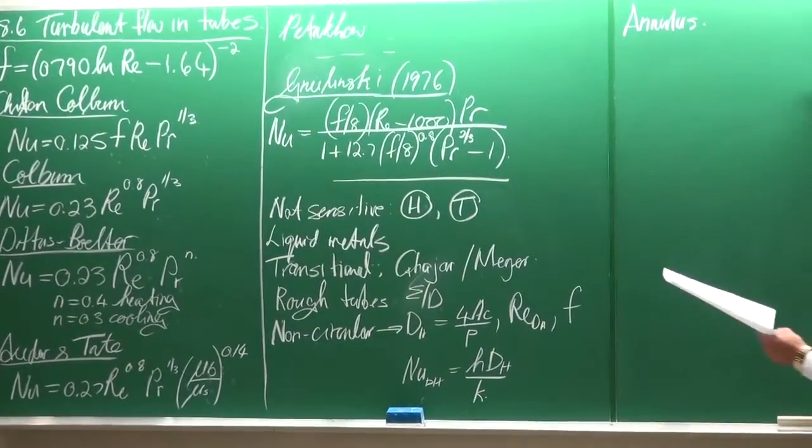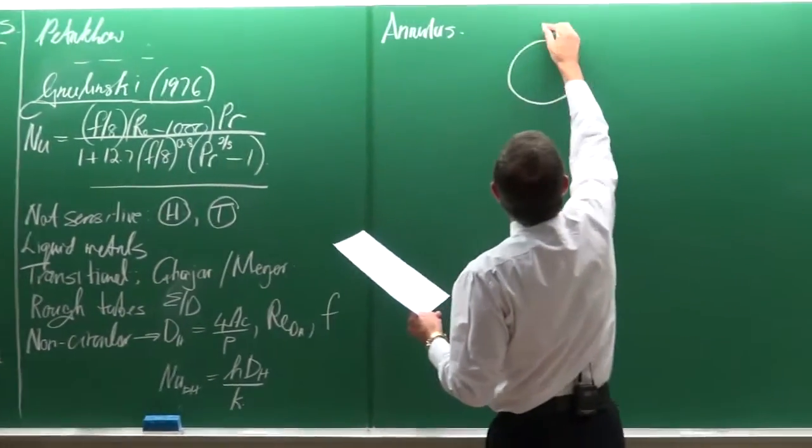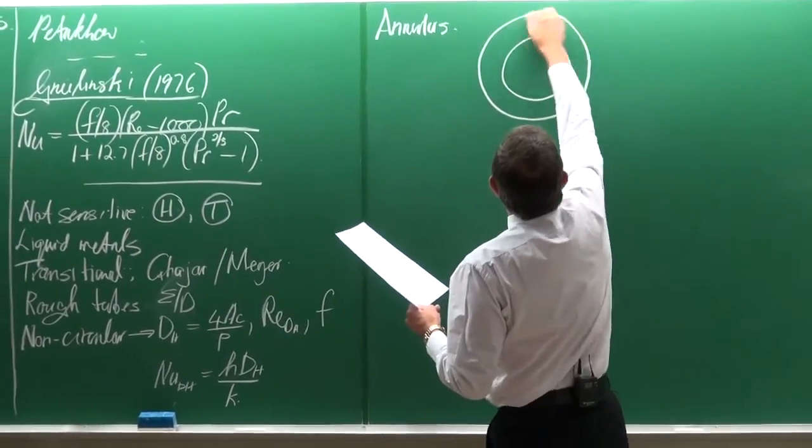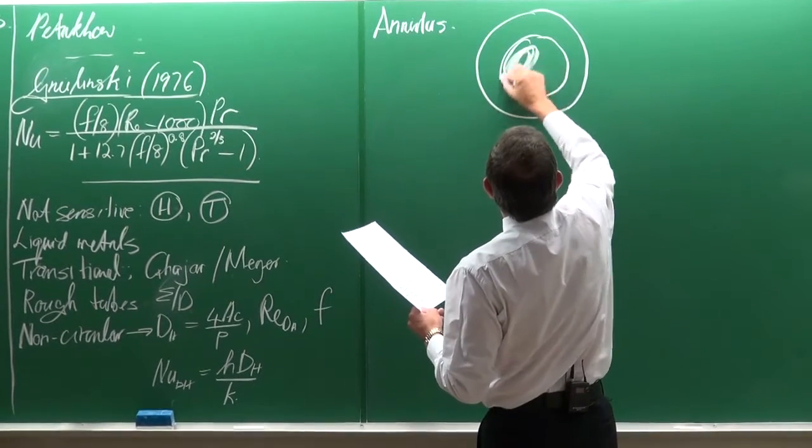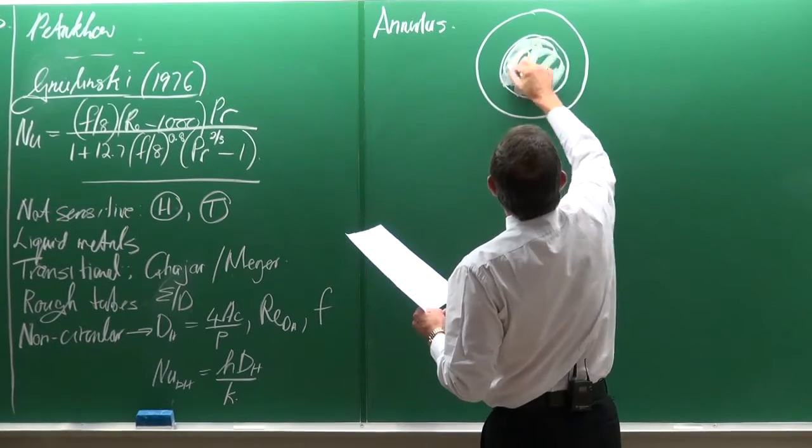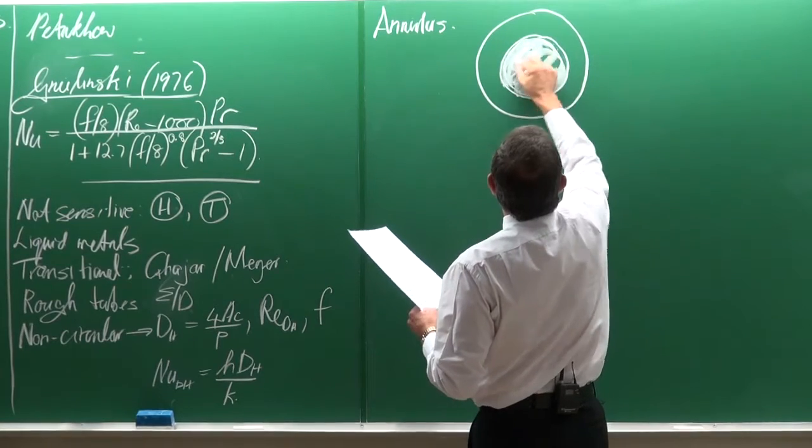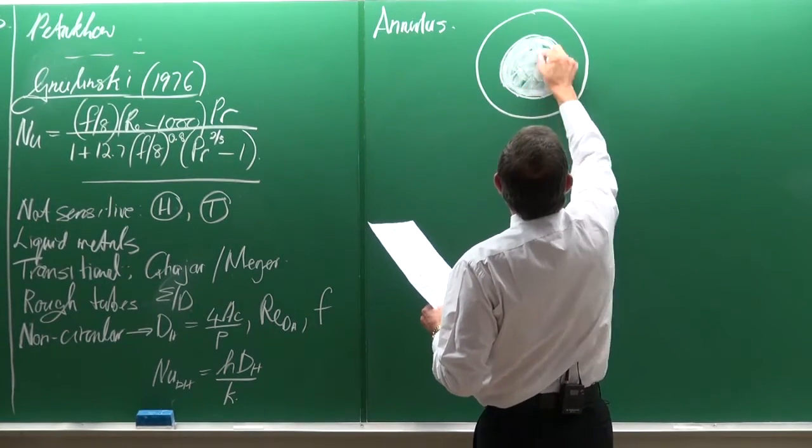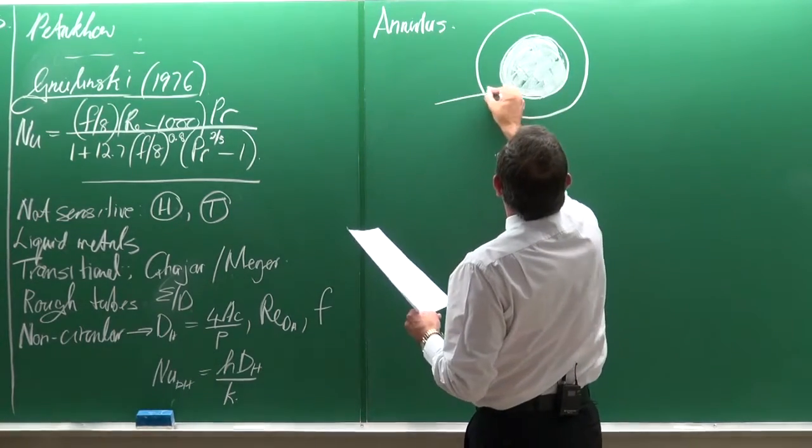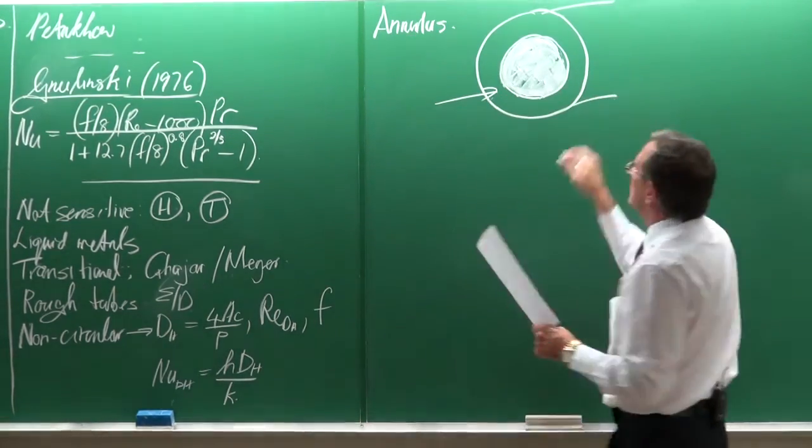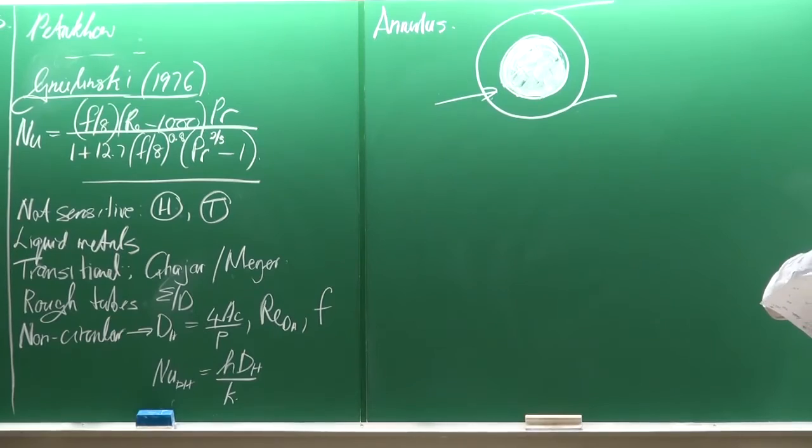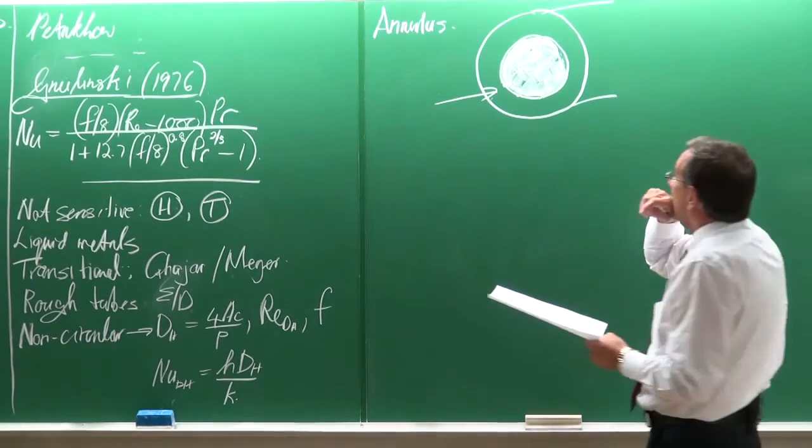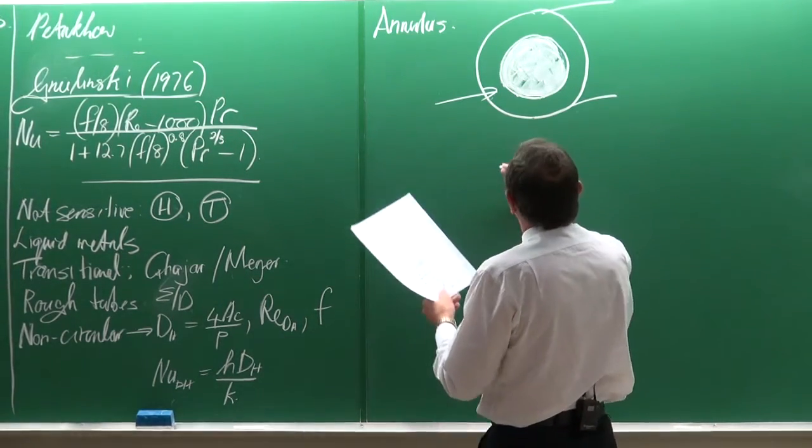Then the other category of problem is flow through an annulus. Flow through an annulus. So if you've got flow, and we are going to do examples like that, and let's suppose this is solid. And the flow flows through the annulus, in between the two tubes.